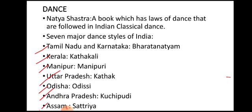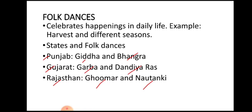The seven major classical dance styles are: Bharatnatyam from Tamil Nadu and Karnataka; Kathakali from Kerala; Manipuri from Manipur; Kathak from Uttar Pradesh; Odissi from Odisha; Kuchipudi from Andhra Pradesh; and Sattriya from Assam.